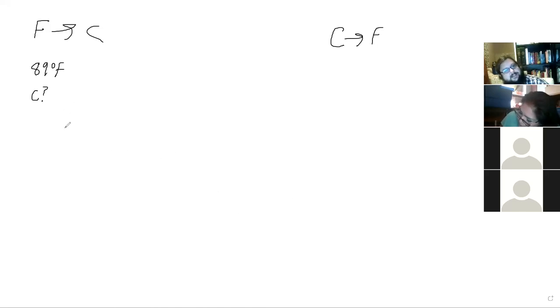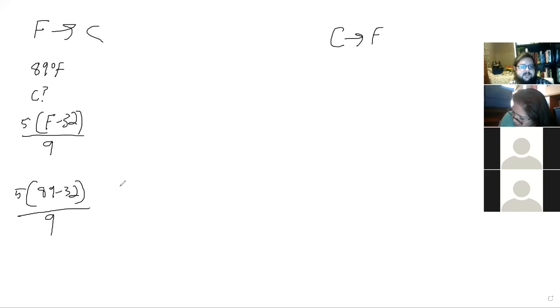So it's F minus 32 times five over nine. So I would take 89 minus 32 times five divided by nine, which gives us, let me see. 89 minus 32 is 57 times five over nine. So 57 times five divided by nine is 31.6 repeating.